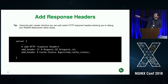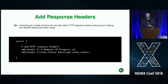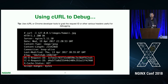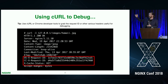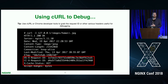You can also add the request ID and upstream cache status as response headers so the client coming through the CDN can provide them back to you when troubleshooting. You might not do this in production, but it's really useful in non-production when working with developers. If you're using curl to debug, you can see it in plain view — one response header for the load balancer request ID, one for the content cache, and the cache status. A developer testing can see "it's a hit — cool, it got served from NGINX."